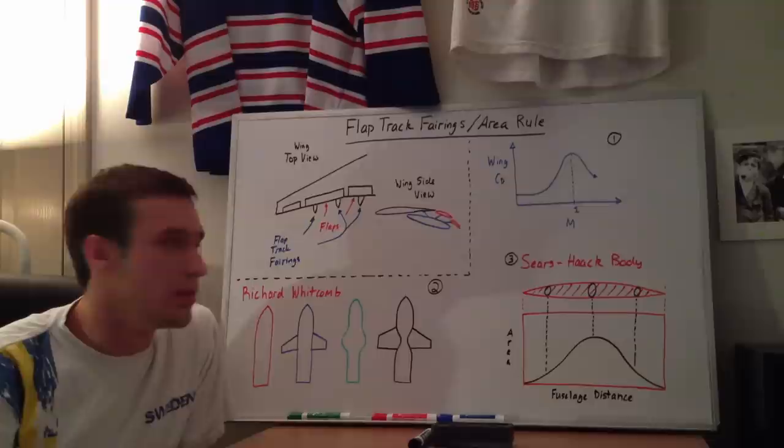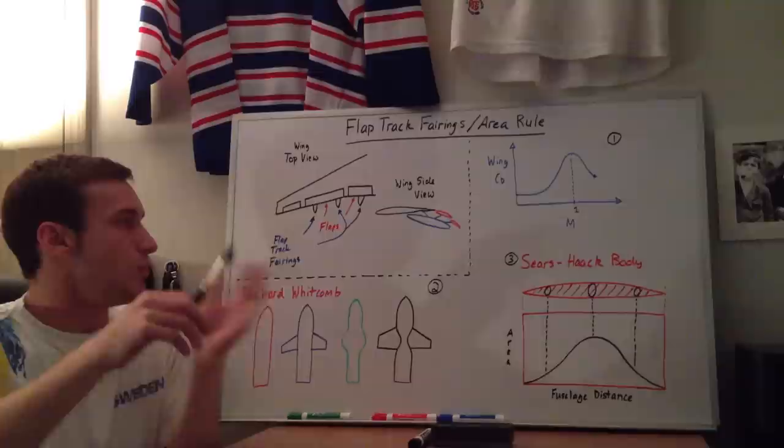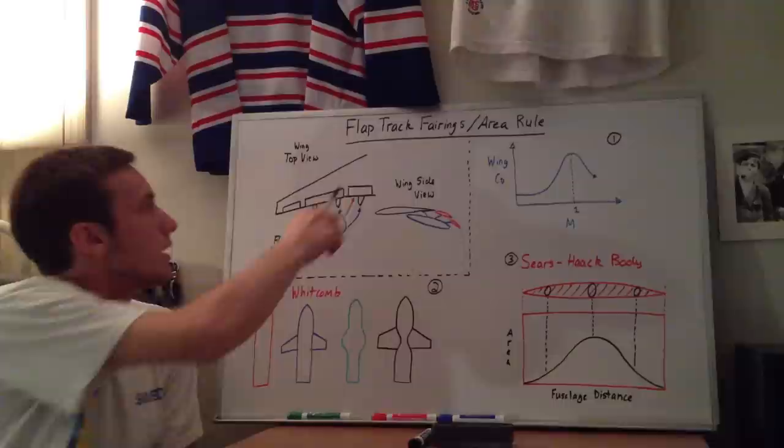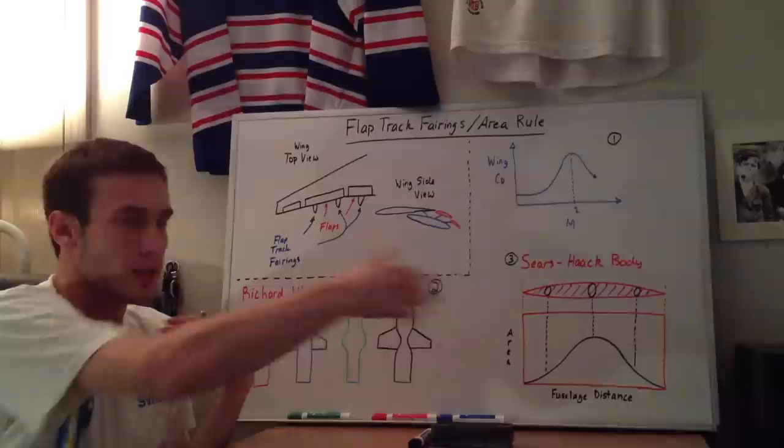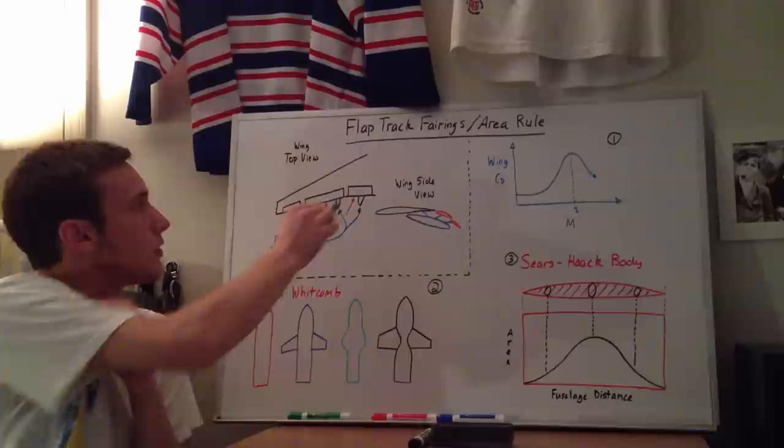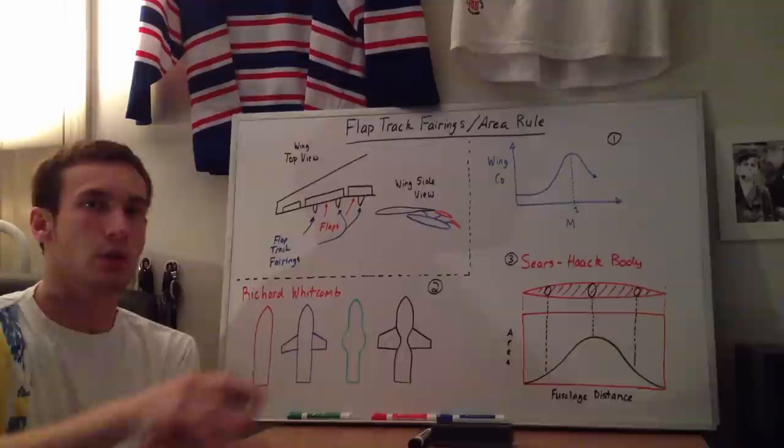Where do flap track fairings come into play here? On commercial planes, you start out at the nose and as you move back along the plane the area increases, and when you get to the wing the area increases more because you're adding volume. But then once you get toward the back of the wing, the wing narrows and the volume decreases. What the flap track fairings can actually do is help smooth out the volume distribution as you move from forward to backward on the plane.